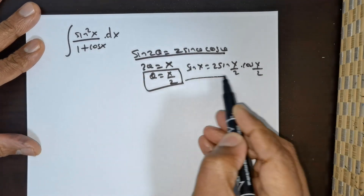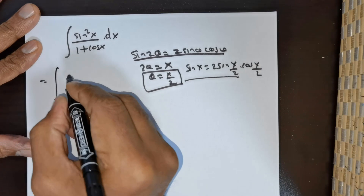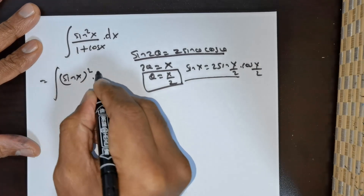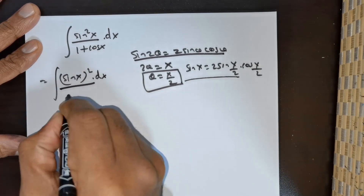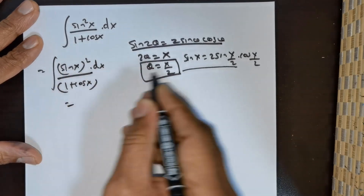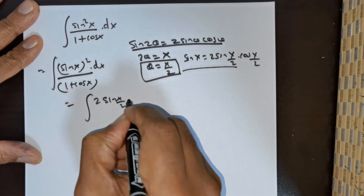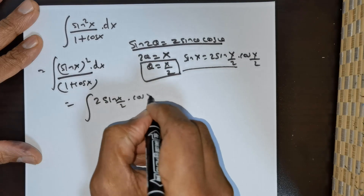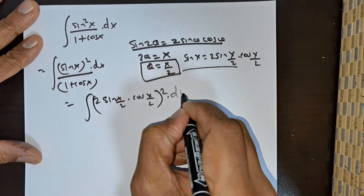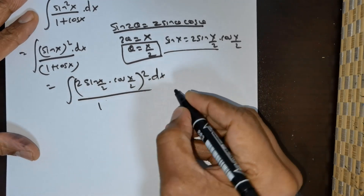I am going to utilize this formula here. So first let me rewrite this as sin²(x) dx divided by (1 + cos(x)). Then I make the substitution: [2·sin(x/2)·cos(x/2)]² dx divided by (1 + cos(x)).